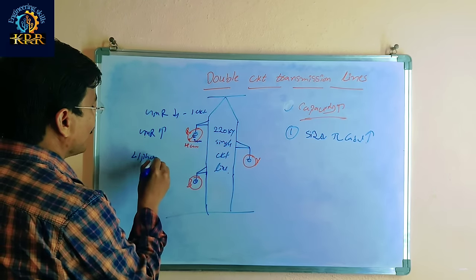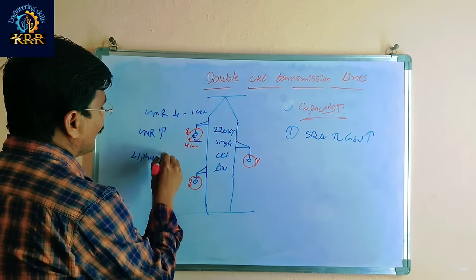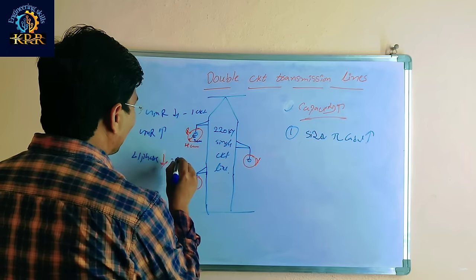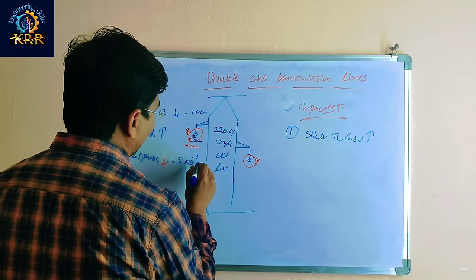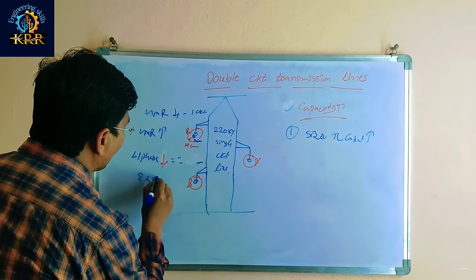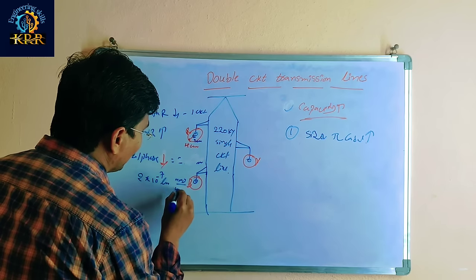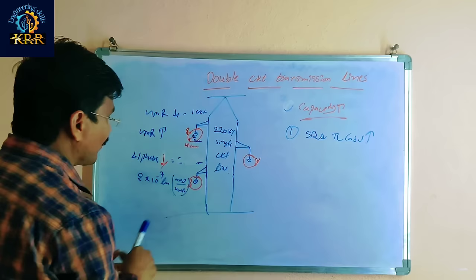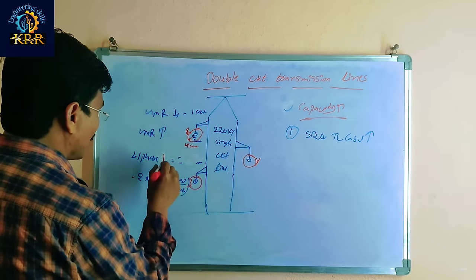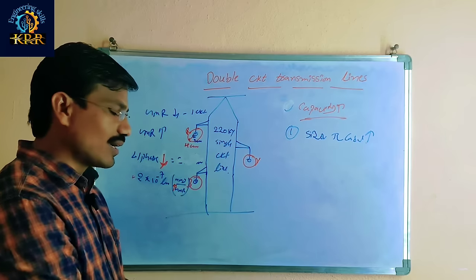As GMR increases, the inductance per phase will reduce. The inductance per phase formula is: L = 2 × 10⁻⁷ × ln(GMD / GMR). Since this GMR is increasing, the inductance per phase is reducing. This is the first option.